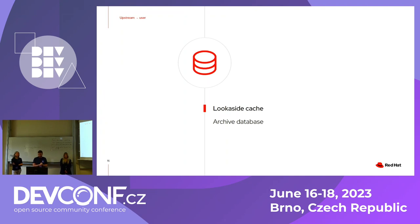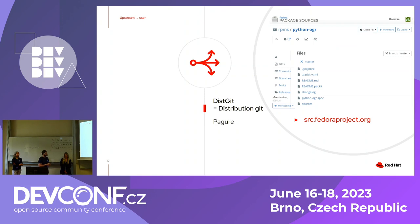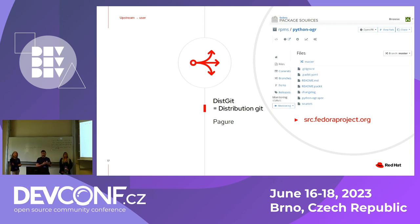The lookaside cache keeps the sources, but that's still not enough — we need to know how to build them. So we have a dist-git where we keep some files. In our case, we sync our configs and also a current version indicator. Apart from those, there is a spec file which is basically a series of steps used to create the RPM package, and a sources file which references the archives in the lookaside cache.